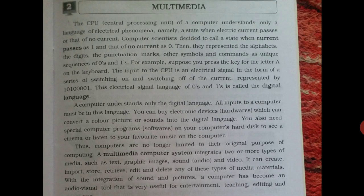Computer scientists decide to call the state when current passes as 1, and that of no current as 0. They represent these as alphabets, digits, punctuation marks, and symbols that correspond to unique sequences of 1s and 0s.